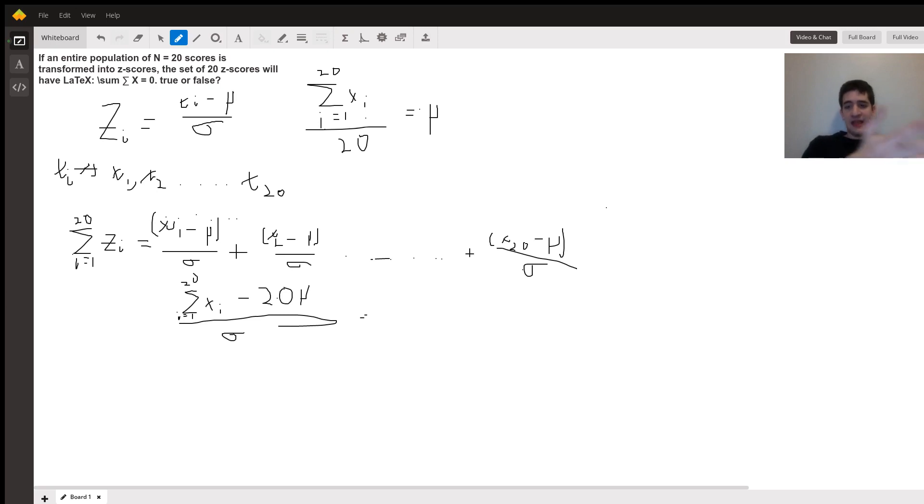Well, and again, the reason that we know it's mu in this case is because this is the entire population. So in this case, the sample mean is equal to the population mean, because we're not taking a subset. This is the whole thing.